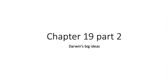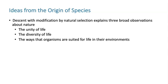Welcome back to Chapter 19, Part 2. Here we're going to explore Darwin's Big Ideas. As we talked about before in Part 1, we were discussing the concept of descent with modification, and the way that happens is by natural selection.